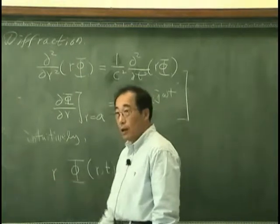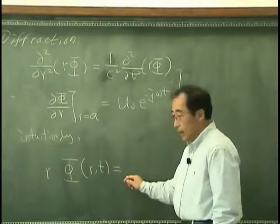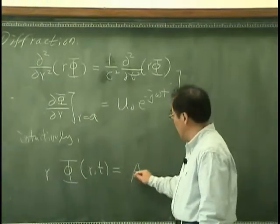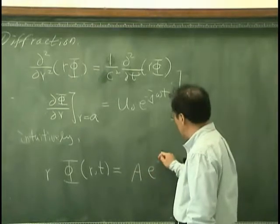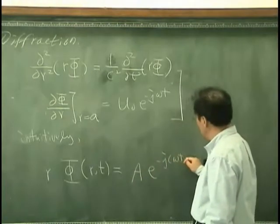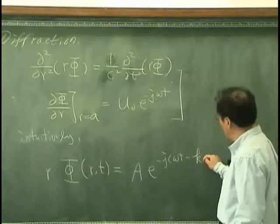That has to be r phi has to be same as A exponential minus j omega t minus k r.